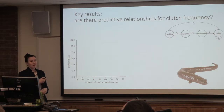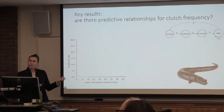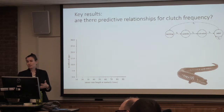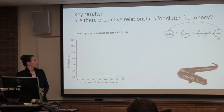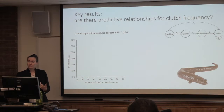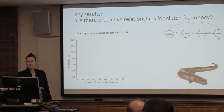So then we asked: are there predictive relationships for clutch size? A larger animal should have a larger clutch size because its body is bigger and egg size is fairly standard among the species, so you'd think you could fit more eggs in a larger animal. We ran this linear regression and got an R-squared of 0.160, which is kind of bad — about half of what those other relationships were.